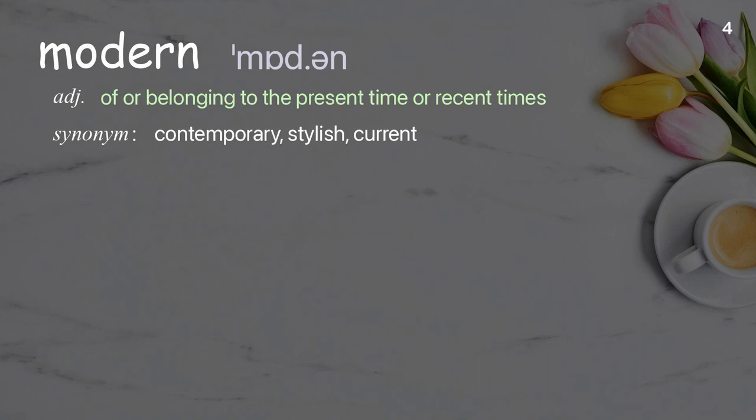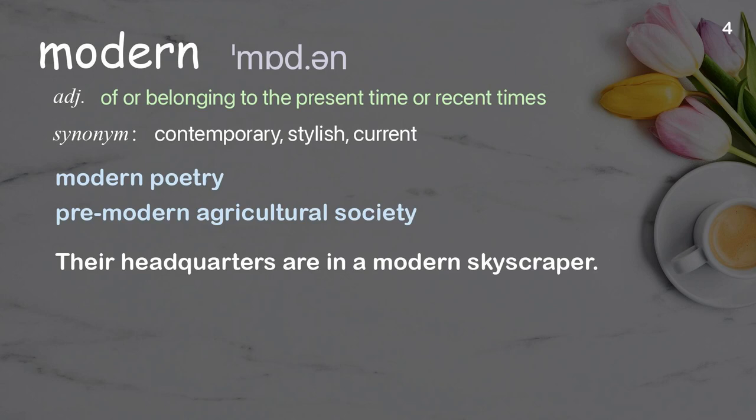Modern: Of or belonging to the present time or recent times. Examples: modern poetry, pre-modern agricultural society. Their headquarters are in a modern skyscraper.